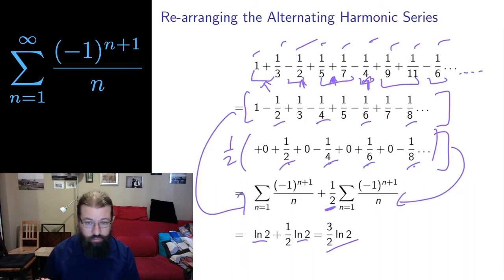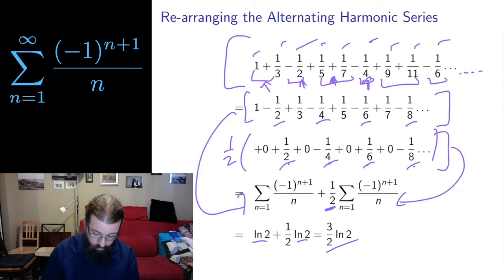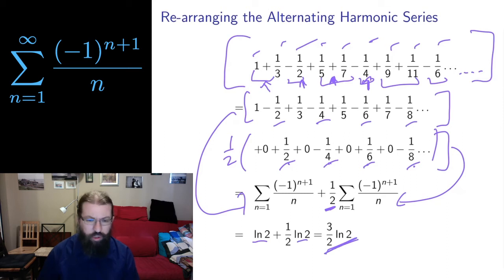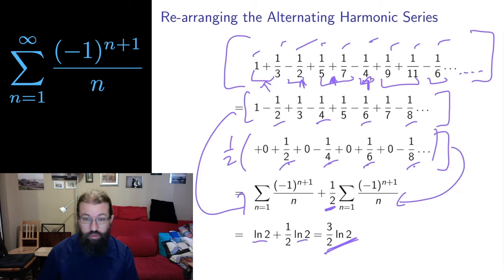Now this is strange. Because the terms up here were exactly the same, but I now have a different sum. How is that possible? How can I rearrange the terms and suddenly come up with a different number? It turns out for the alternating harmonic series you can do this — different rearrangements of the alternating harmonic series give different values.